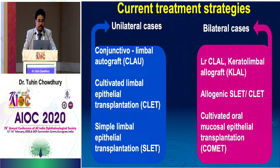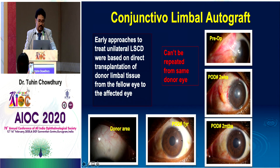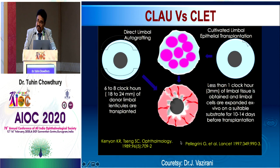What is conjunctival limbal autograft (CLAU)? The early approach: for a case with thermal injury and partial LSCD along with symblepharon, CLAU was taken from the other eye — here is the one-year post-op outcome. The advantage of CLAU is no risk of rejection, but the disadvantage is taking 3–4 clock hours of limbal tissue from the fellow eye, risking iatrogenic LSCD in the donor eye.